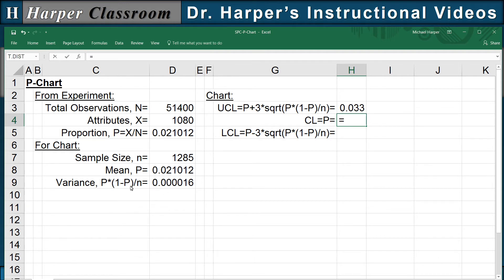Our center line is just our mean, our parameter. And the lower control limit is our mean minus 3 times the square root of our variance, which is our standard deviation. And so there's the lower control limit, center line, and upper control limit.